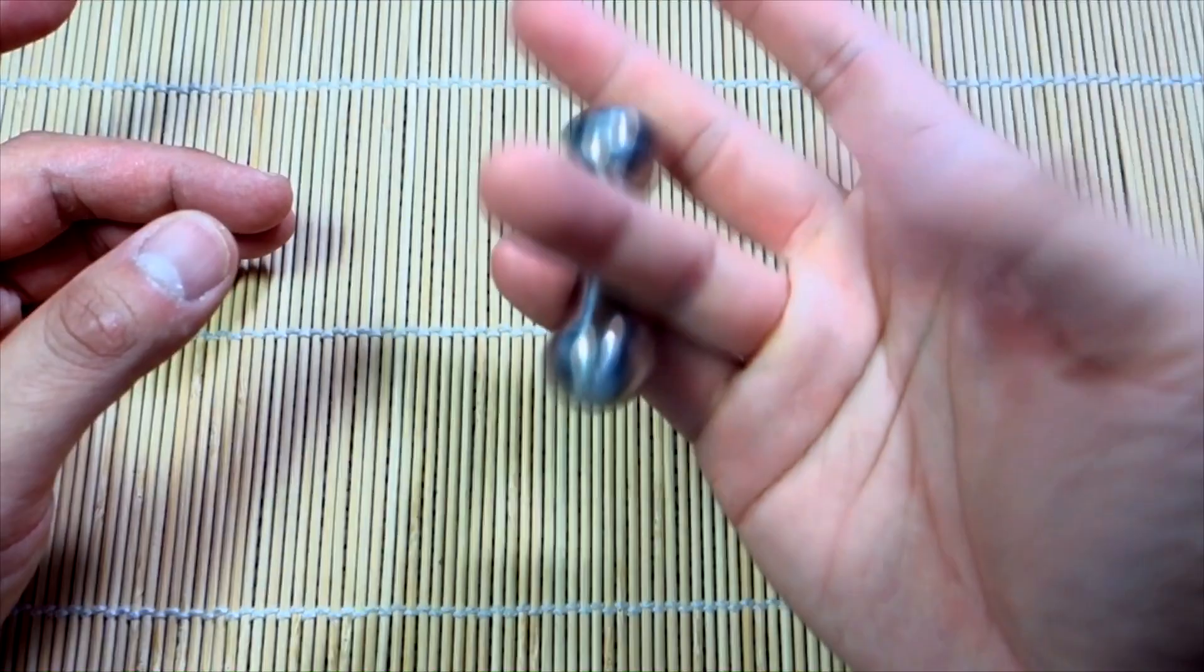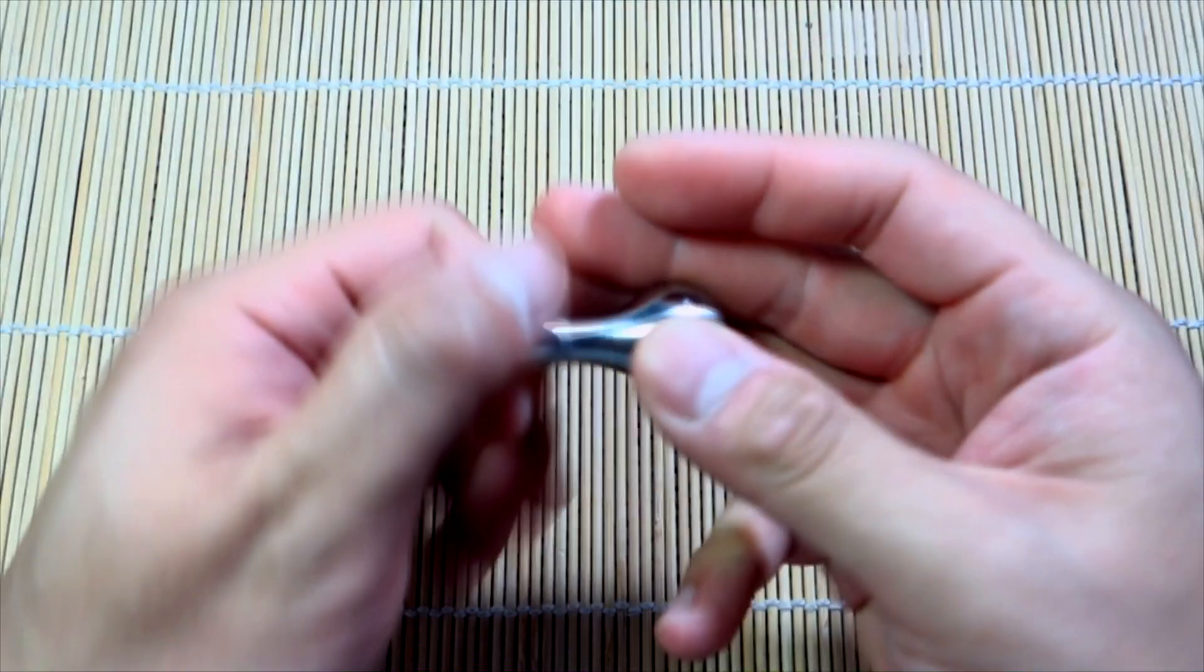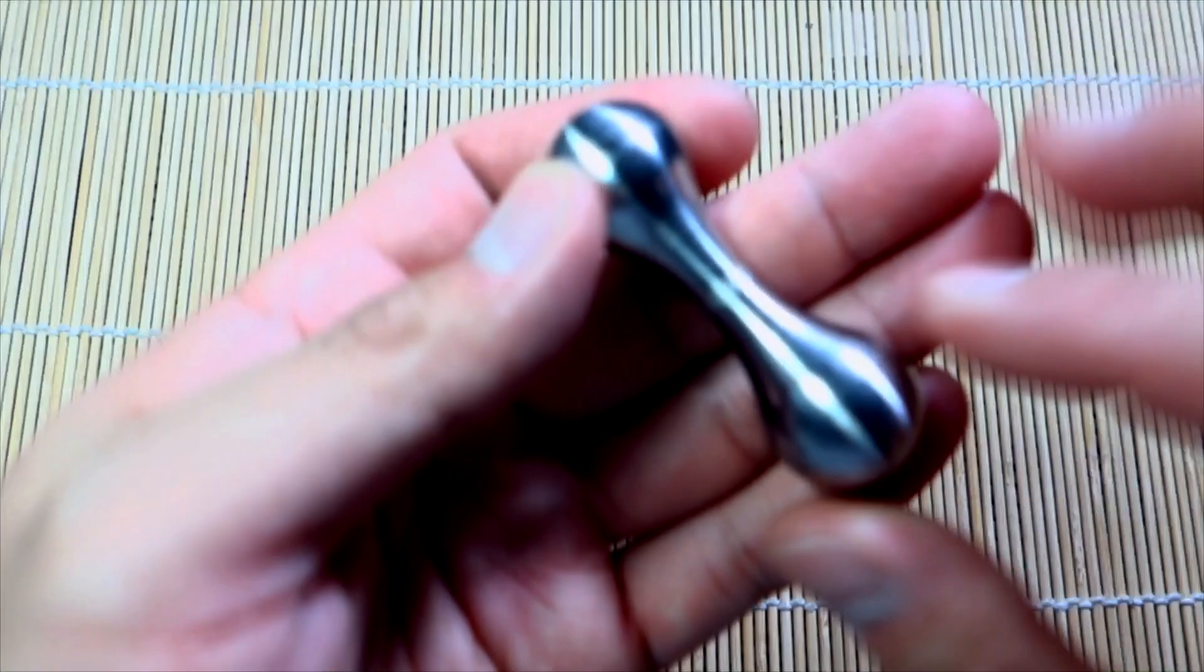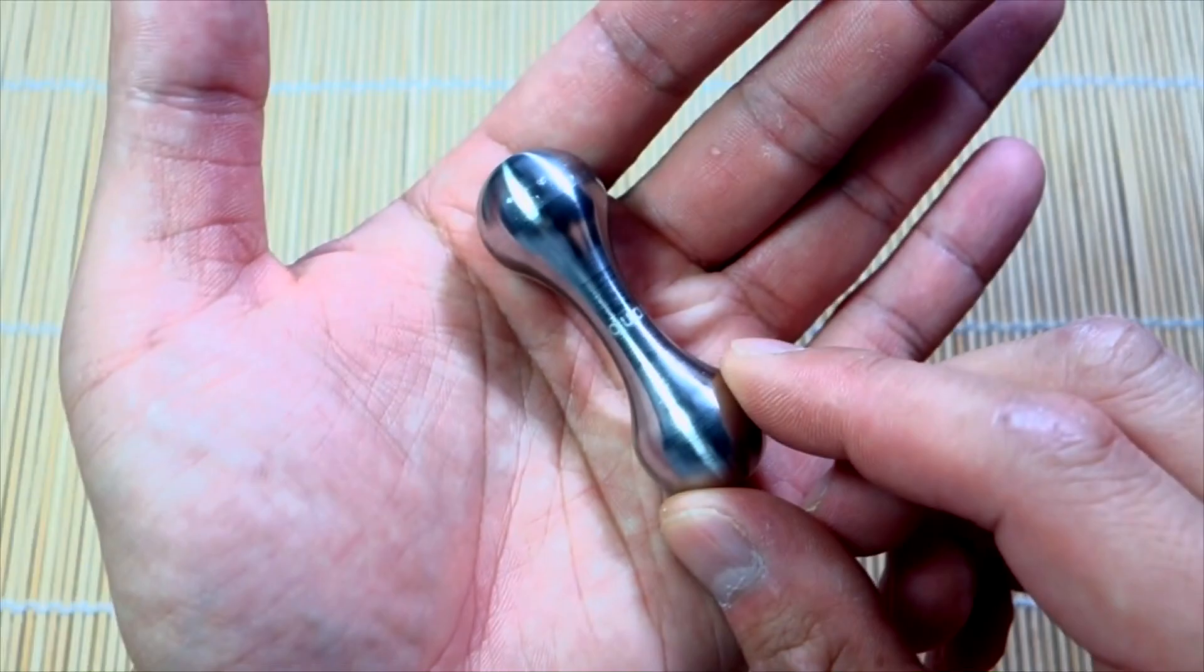As I showed you with the paracord versions, this toy is used and manipulated in the same way, as you can see here. Looking closely at it, it's a solid piece of machined stainless steel. This does come in other materials.